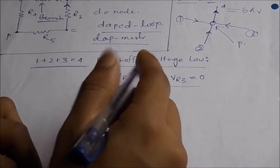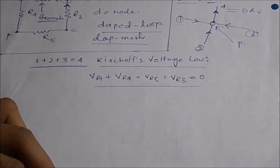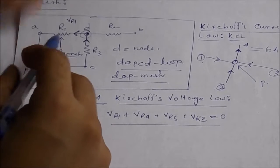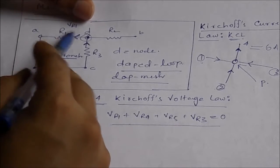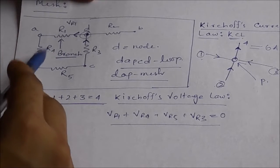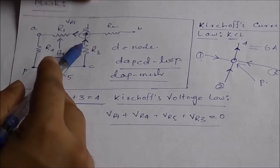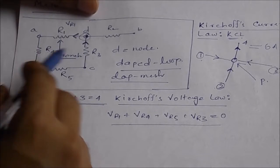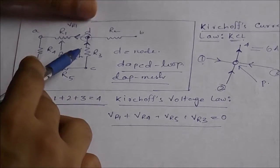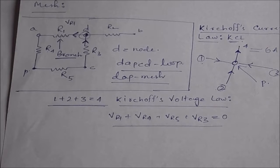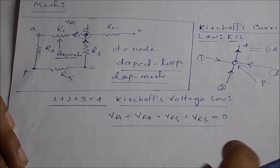Kirchhoff's Voltage Law states that the total voltage in any loop is zero. Taking a loop with voltages VR1, VR4, VR5, and VR3 — the summation of all these voltages will be zero. That means the source voltage plus the voltage drops across resistance, inductance, and capacitance in any closed loop will sum to zero.